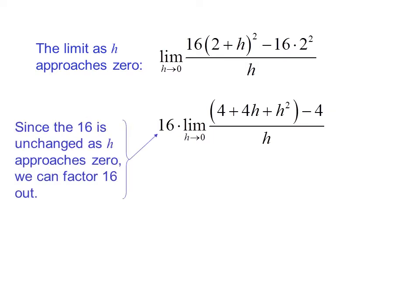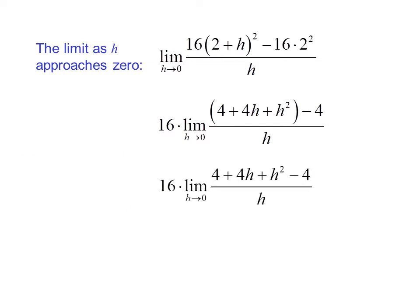We can do some algebra to evaluate the limit. Since the 16 is unchanged as h approaches 0, we can factor 16 out. We also expand (2 plus h) squared, then eliminate the parentheses, cancel the 4s, and cancel an h in the numerator and denominator, giving us 16 times the limit as h approaches 0 of (4 plus h). As h approaches 0, what's left is 16 times 4.